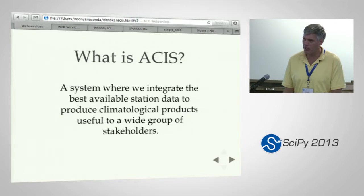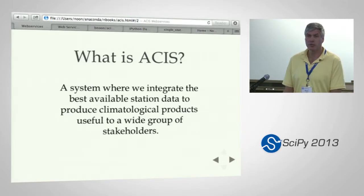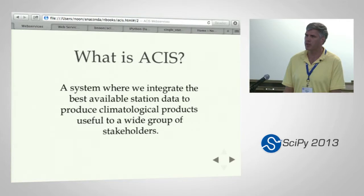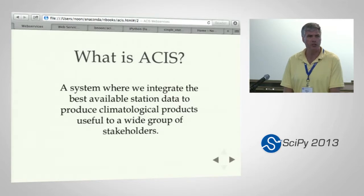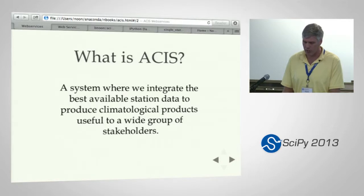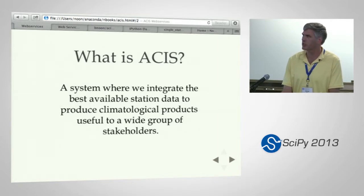We provide a lot of climatological products — summations and summaries for various periods — done in a climatologically coherent manner. So if you need to take an average over a period of months, you need to know how many missing values you allow, what you do with accumulated precip values, whether you can group or de-aggregate them. It's for a wide variety of stakeholders, and a lot of them are not climatologically trained, so we try to make it easy for them.